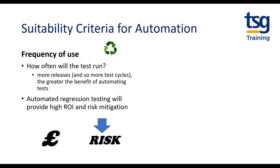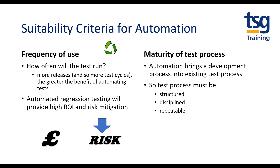It's easy just to focus on regression testing for automation, but those tests are so beneficial to automate because more releases mean more regression testing and a larger benefit from automating the tests — so the return on investment is higher and risks are mitigated. The key question is about the frequency of use. Another consideration is the maturity of the test process — automation adds a development process into the mix, so effective manual testing following a structured, disciplined, repeatable process is good grounding. Otherwise you're just adding another layer to a flaky setup.